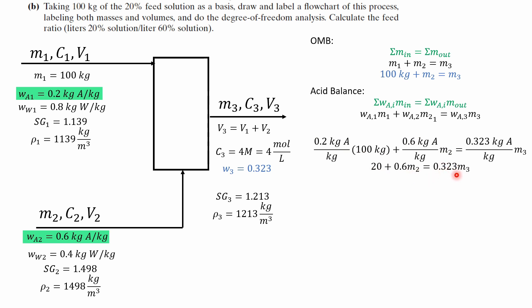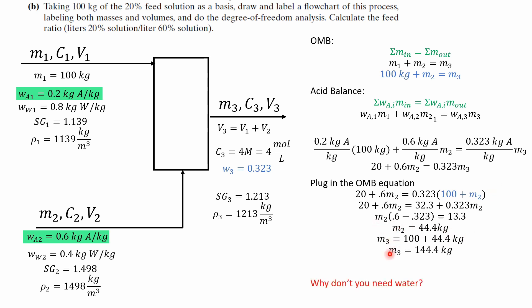In other words this equation is going to be written as 20 plus 0.6 M2 and set that equal to 0.323 M3 and now look we have two equations and two unknowns so we can plug in the original mass balance equation and solve for the system of equations. This is going to give us an answer for M2 and M3.